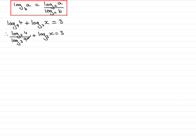Now the log of 9 in base 3 is 2, because 3 to the power 2, 3 squared, is 9. And you should know that result. So we'll write that in. That's the log in base 3 of 4, all divided by 2, plus the log in base 3 of x equals 3.